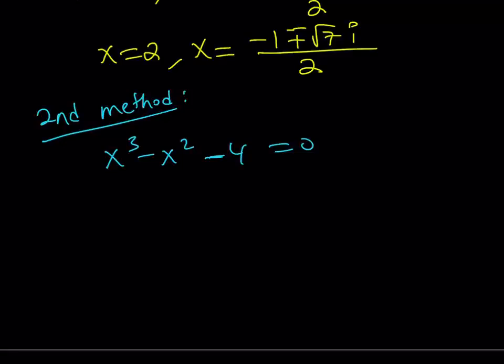Now, the second method is going to involve breaking down the x squared. How do I break it down? I can write it as x³ - 2x² + x² - 4 = 0.